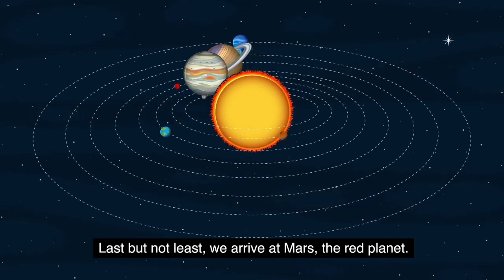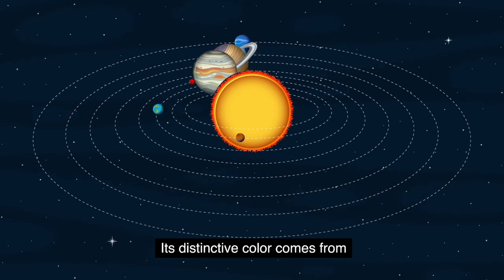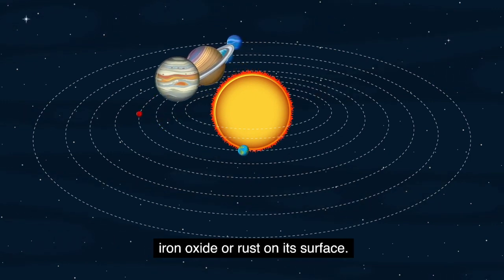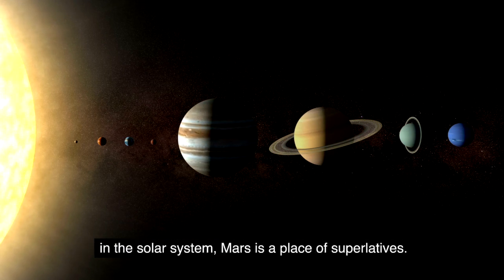Last but not least, we arrive at Mars, the red planet. Its distinctive color comes from iron oxide or rust on its surface. With the largest volcano and the deepest longest canyon in the solar system, Mars is a place of superlatives.